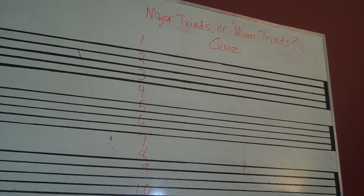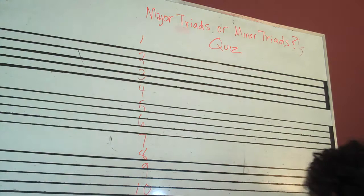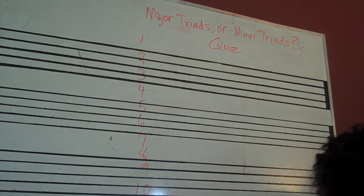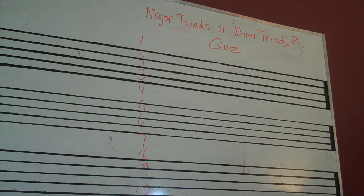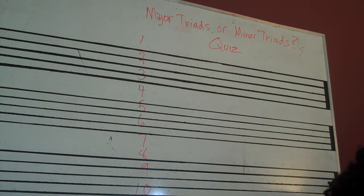Today we're going to do a little quiz on major triads or minor triads, a little ear training exercise. You might want to grab a piece of paper. I'm going to play each chord twice, tell you which one it is, and then let you know all the answers at the end. There are ten of them, so let's start with the first one — here we go.